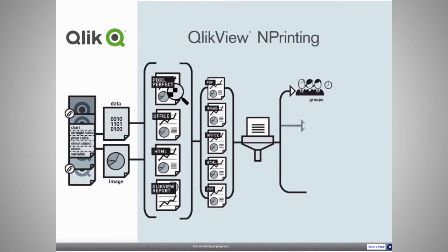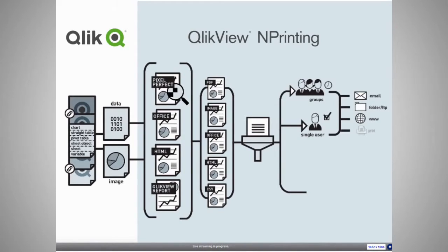We can filter these on a user-specific basis and then distribute them to distribution groups and individual users, both one-off and according to schedules. Distribution can be via email as attachments, or in some cases images and HTML can be embedded in the email message body. We can save to local network drives, load files via FTP to SharePoint and websites, and also send them directly to network printers. We can also allow users from QlikView to render reports on demand.